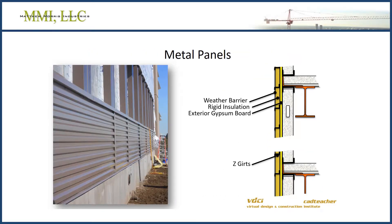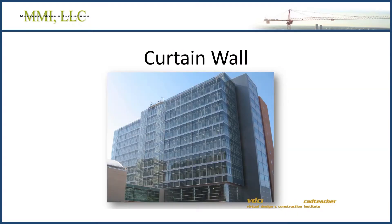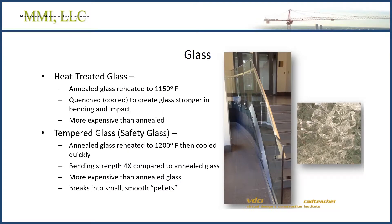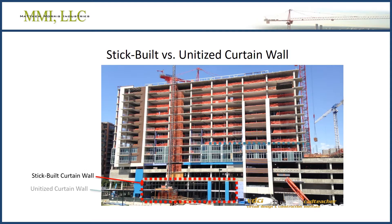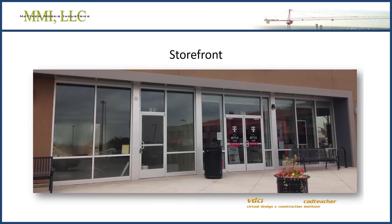After discussing the wall systems, we move on to the building exterior and discuss the different types of cladding systems. You will also learn a lot about curtain walls, glass and glazing, the common types of curtain walls, and alternatives to curtain walls such as storefront systems and structural glass.